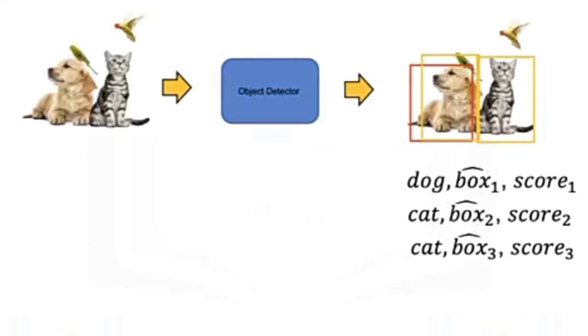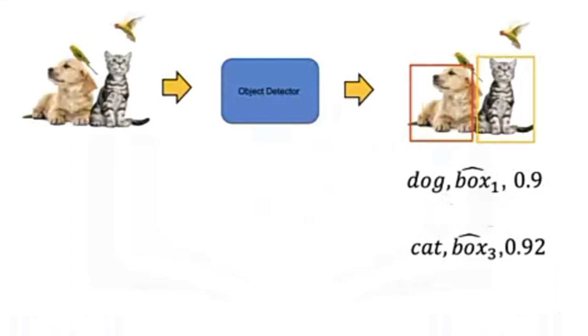Here we have detected one dog and two cats. It looks like we detected both a cat and a dog in the dog's location. Examining the score, we see that one of the cat predictions has a low score of 0.5. If we only accept scores above 0.9, we correctly detect the cat and dog. Usually, models will only output objects over a specific threshold.